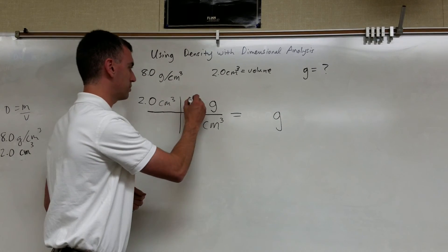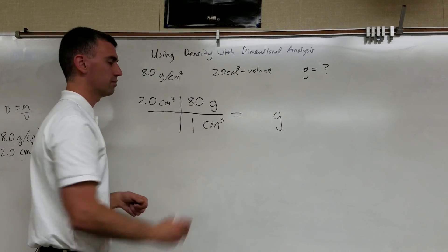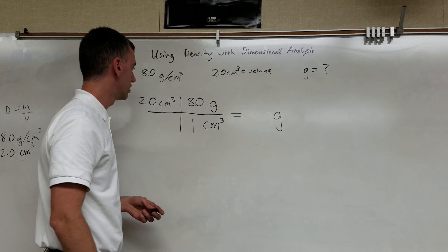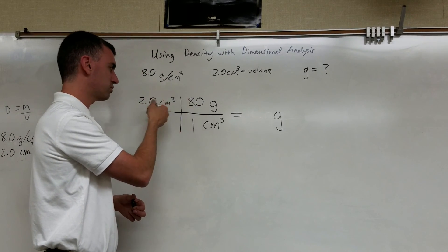8.0 grams per cubic centimeter. So since the 8.0 is next to the grams, I'm going to put that right here next to the grams. 8.0 grams per cubic centimeter. So 2.0 times 8.0, 2 times 8 is 16.